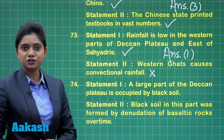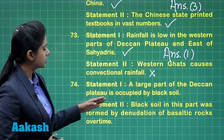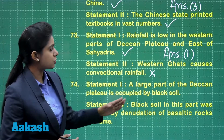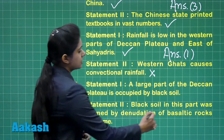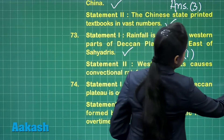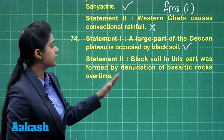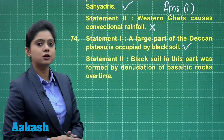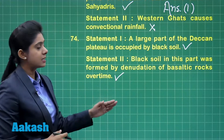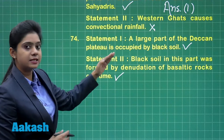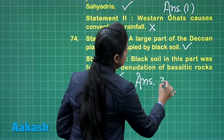Question 74: The first statement says a large part of the Deccan Plateau is occupied by black soil — this is a correct statement. The second statement says black soil in this part was formed by denudation of basaltic rocks over time — this is also a correct statement, and the second statement explains the first statement. So our answer here is option number three.